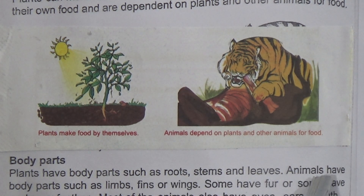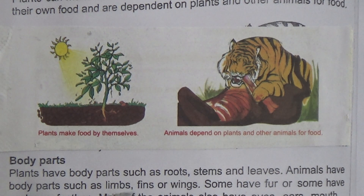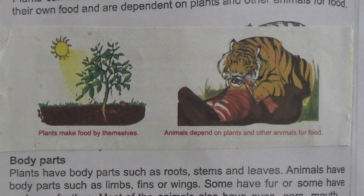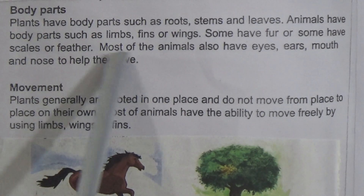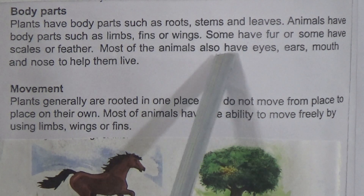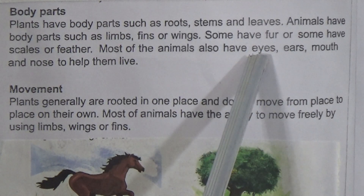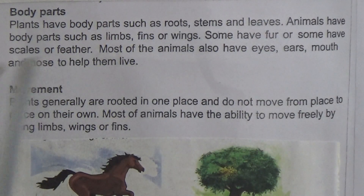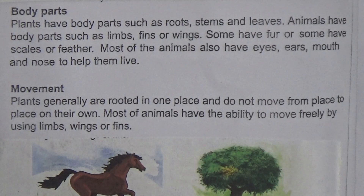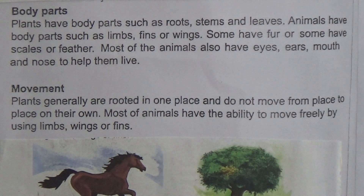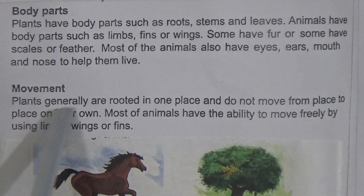Body parts: plants have body parts such as roots, stems, and leaves. Animals have body parts such as limbs, fins, or wings. Some have fur, some have scales or feathers. Most animals also have eyes, ears, mouth, and nose to help them live.